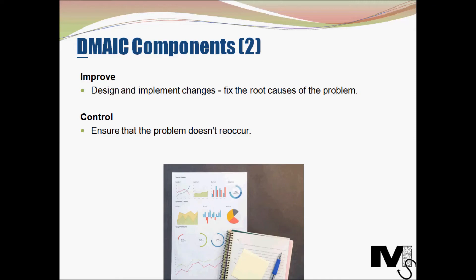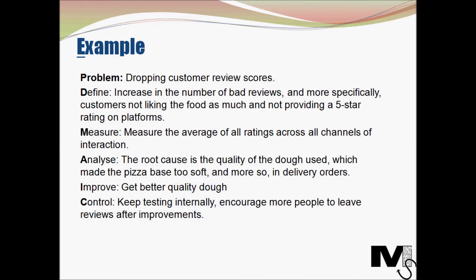Let's go back to our Only Pizzas Limited example. Let's assume that the problem they face now is dropping customer review scores. They've decided to use the DMAIC methodology to try and correct this problem. Here are the five stages in use. First stage being Define: the problem is an increase in the number of bad reviews. More specifically, customers are not liking the food as much and are not providing five-star ratings on Google, Facebook, Instagram, TripAdvisor, etc.